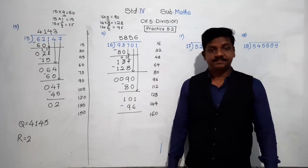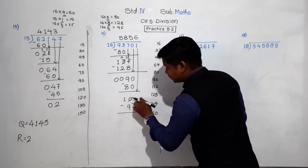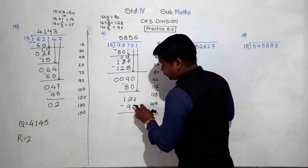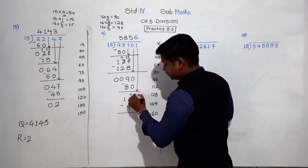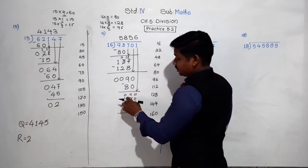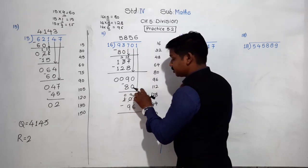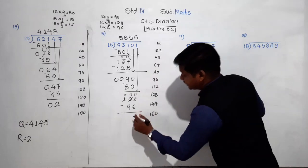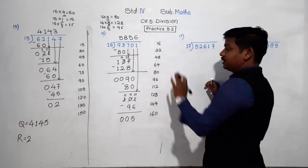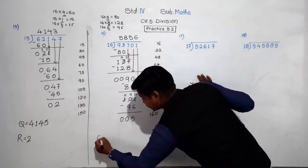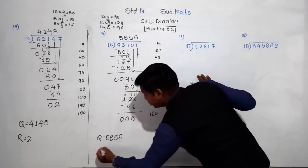101 minus 96: 1 minus 6 not possible, take borrow from 0 — the 0 becomes 9, and 1 becomes 11. From this 1 we also take borrow, so the 0 becomes 9. 11 minus 6 is 5, 9 minus 9 is 0, and 0. All digits are over. The quotient is 5,856 and the remainder is 5.